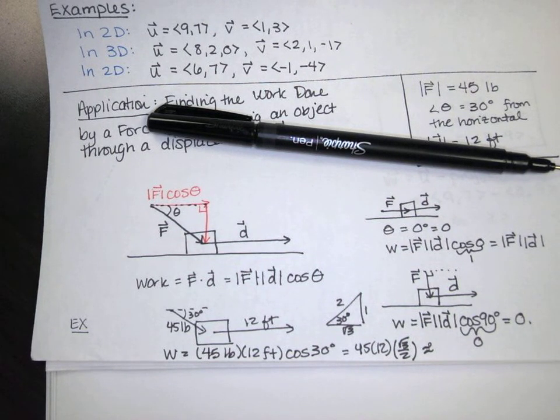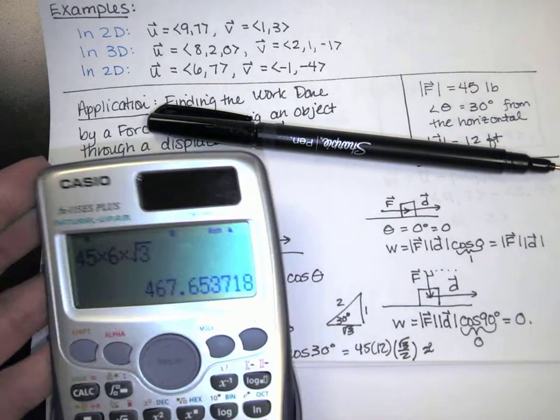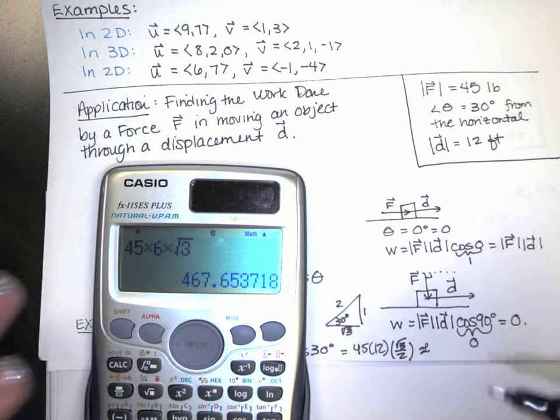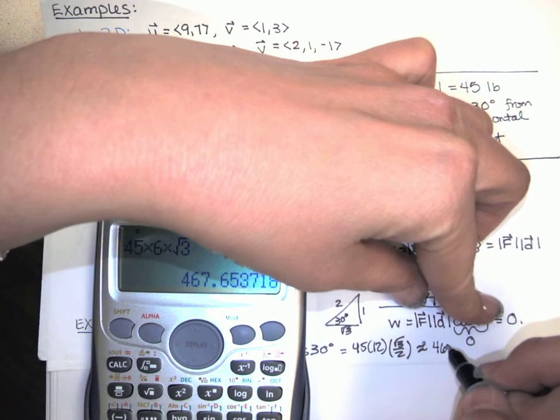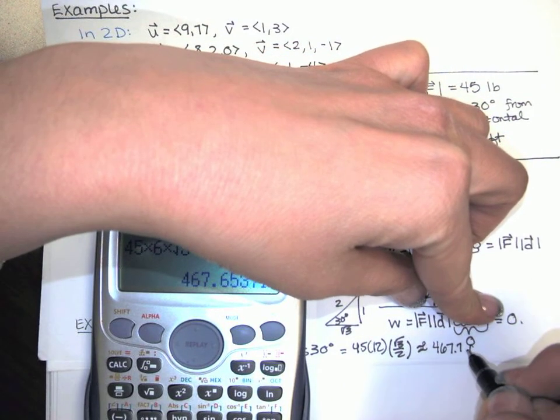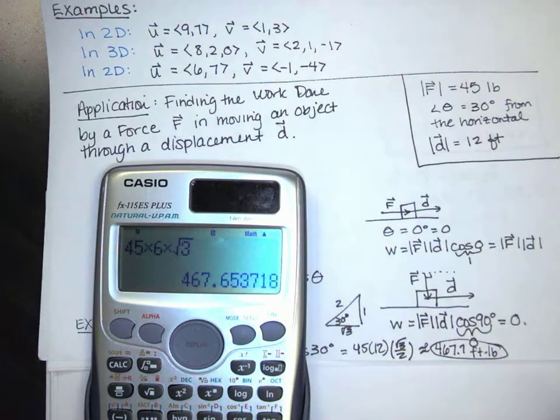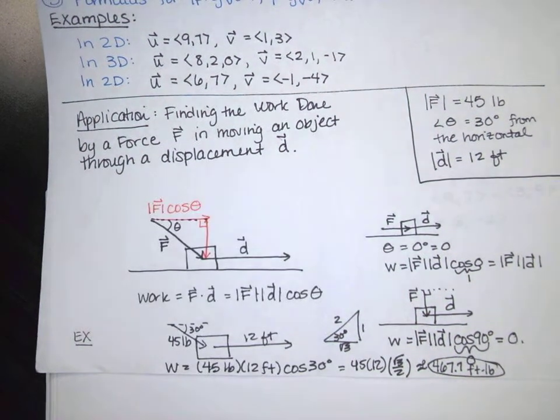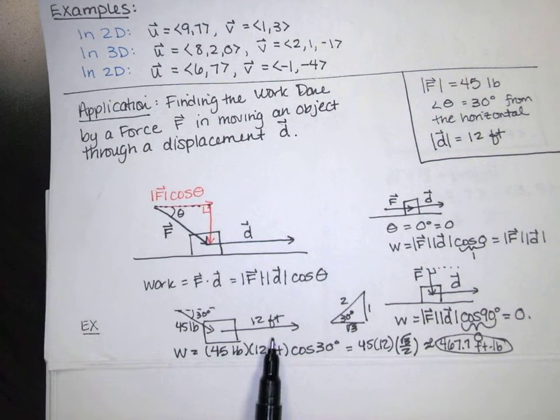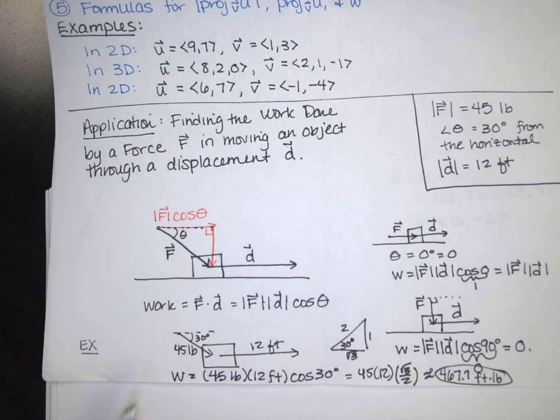So if we're doing physics, we'll probably want a numerical approximation rather than an exact number. In math class, I tend to like exact numbers rather than numerical approximations. I'm just going to do 45 times 12 divided by 2, which is 6, times the square root of 3 in my calculator. And the approximation I get is 467.7, and the units are foot-pounds. So that's the amount of work I did when I applied this force at this angle.